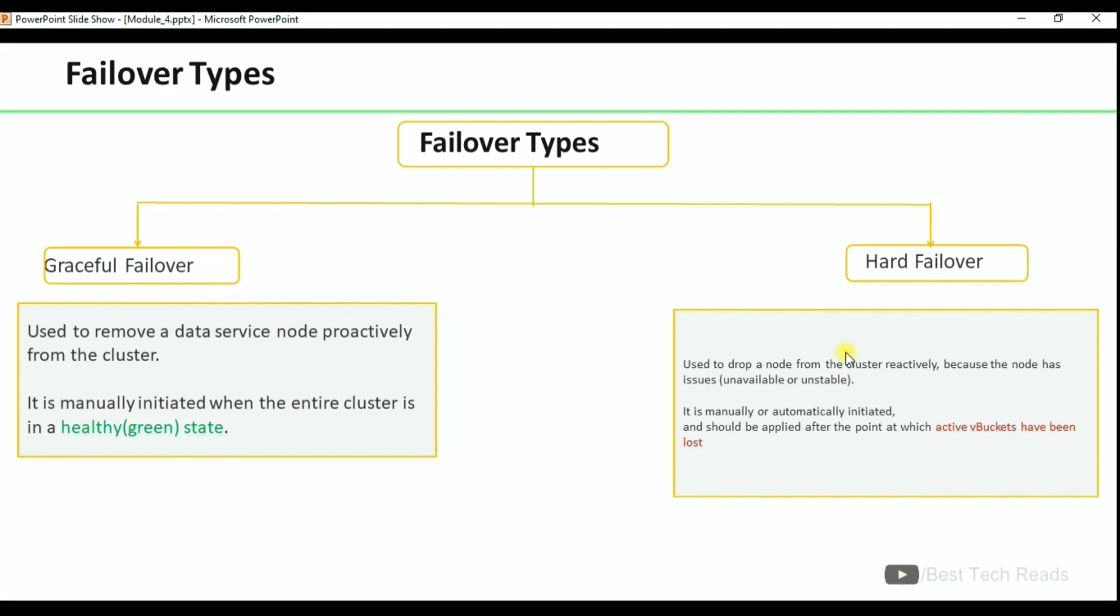Hard failover: this is used to drop a node from the cluster reactively because the node has issues. So hard failover can be initiated manually as well as automatically. The main drawback of hard failover is in-flight transactions will be affected.